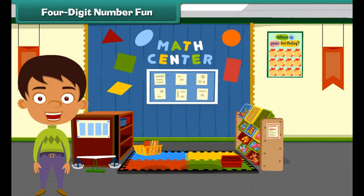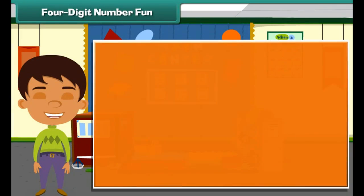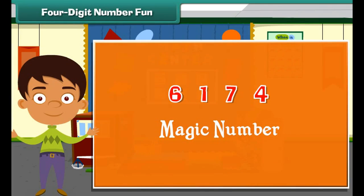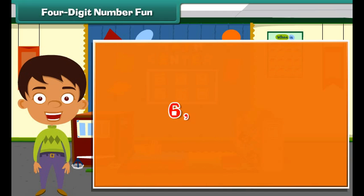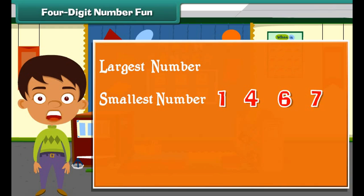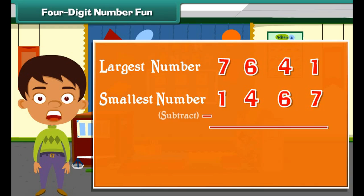Look at the number 6174 — it is a magic number! Form the smallest and largest four-digit numbers using the digits 6, 1, 7, and 4. The smallest number formed is 1467, and the largest possible number is 7641. Now subtract 1467 from 7641 — the difference is 6174!